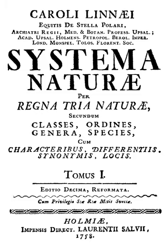Systema naturae, originally written in Latin as 'Systema naturae' with a ligature, is one of the major works of the Swedish botanist, zoologist and physician Carl Linnaeus, and introduced the Linnaean taxonomy. Although the system, now known as binomial nomenclature, was partially developed by the Bauhin brothers, Gaspard and Johan, 200 years earlier, Linnaeus was the first to use it consistently throughout his book. The first edition was published in 1735.